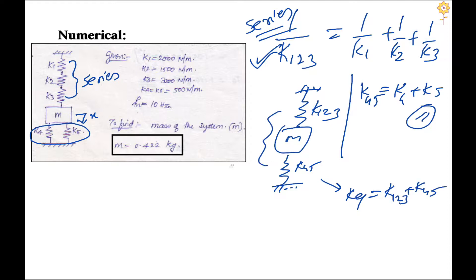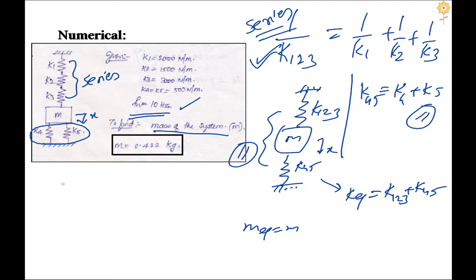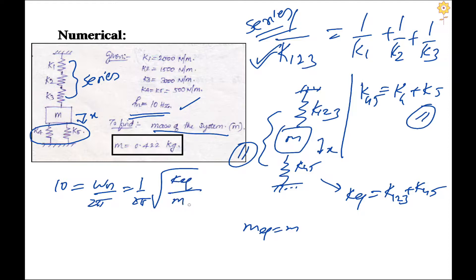M_equivalent equals M itself since there is only one mass. The frequency is given as 10 Hz, so frequency = (1/2π)√(K_eq / M). With K_eq known, solving for M gives M = 0.422 kg.